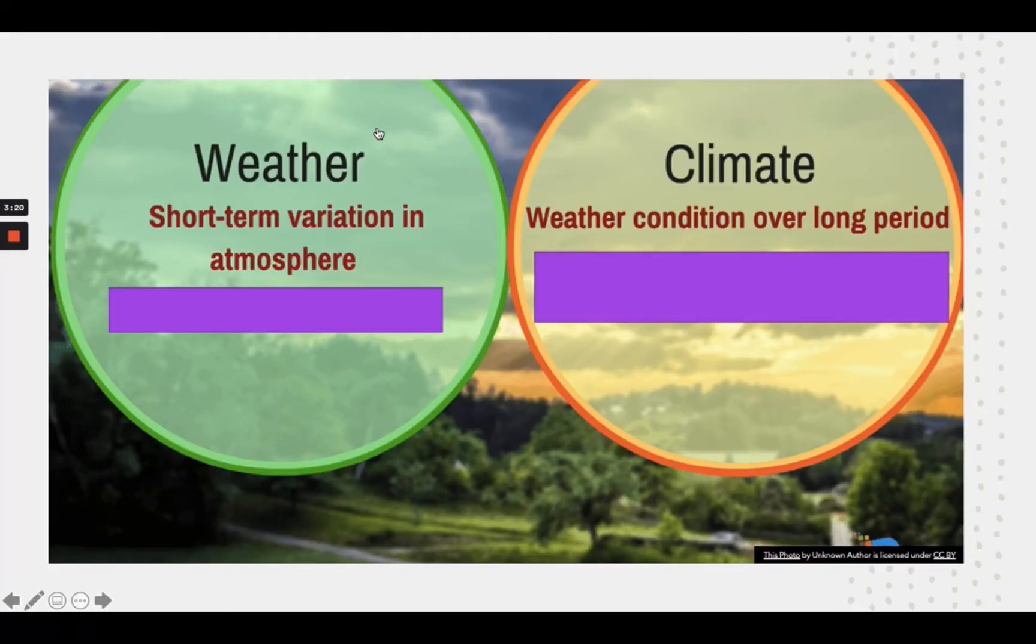Let us differentiate weather from climate. Weather is a short-term variation in the atmosphere, while climate is a weather condition over a long period of time.